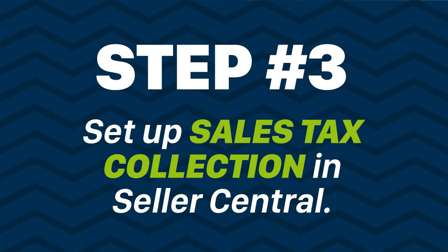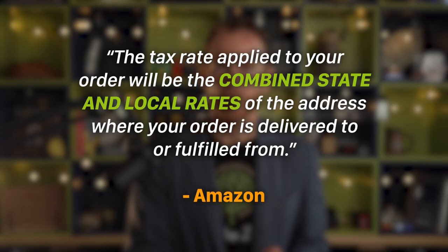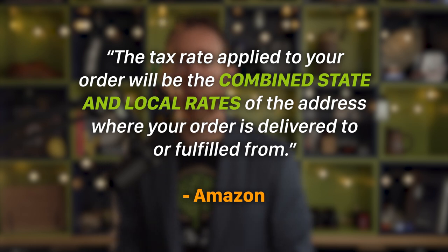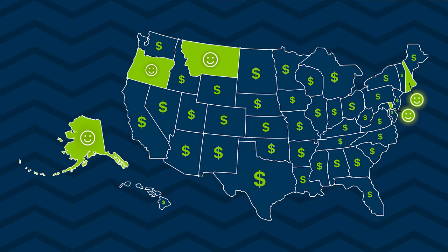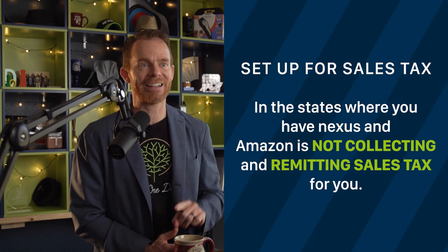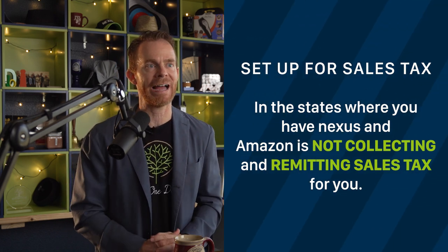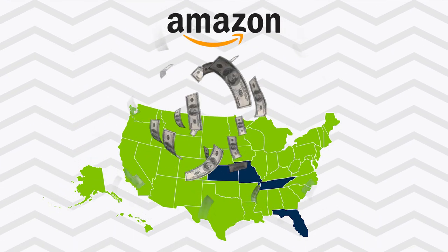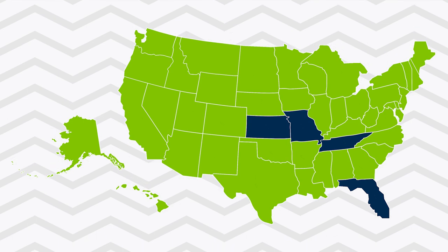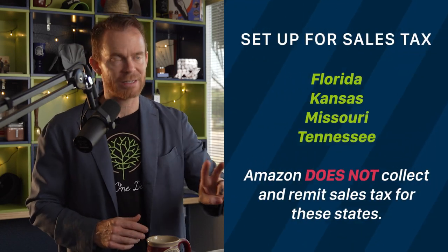Step number three: set up sales tax collection in Seller Central. Amazon says: 'The tax rate applied to your order will be the combined state and local rates of the address where your order is delivered to or fulfilled from.' Amazon collects and remits taxes for the vast majority of the 45 states who require sales tax, which is a huge help to us. But which states do you need to set up for sales tax collection in Seller Central? In the states where you have nexus and Amazon is not collecting and remitting sales tax for you. Currently, there are a few states Amazon does not yet collect and remit sales tax for: Florida, Kansas, Missouri, and Tennessee.